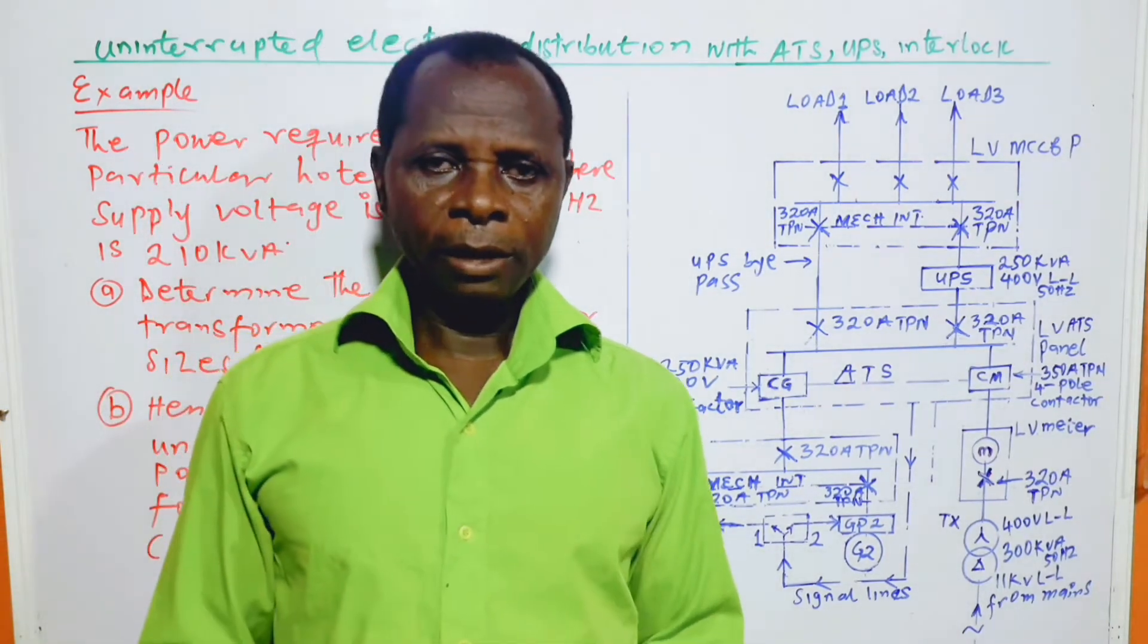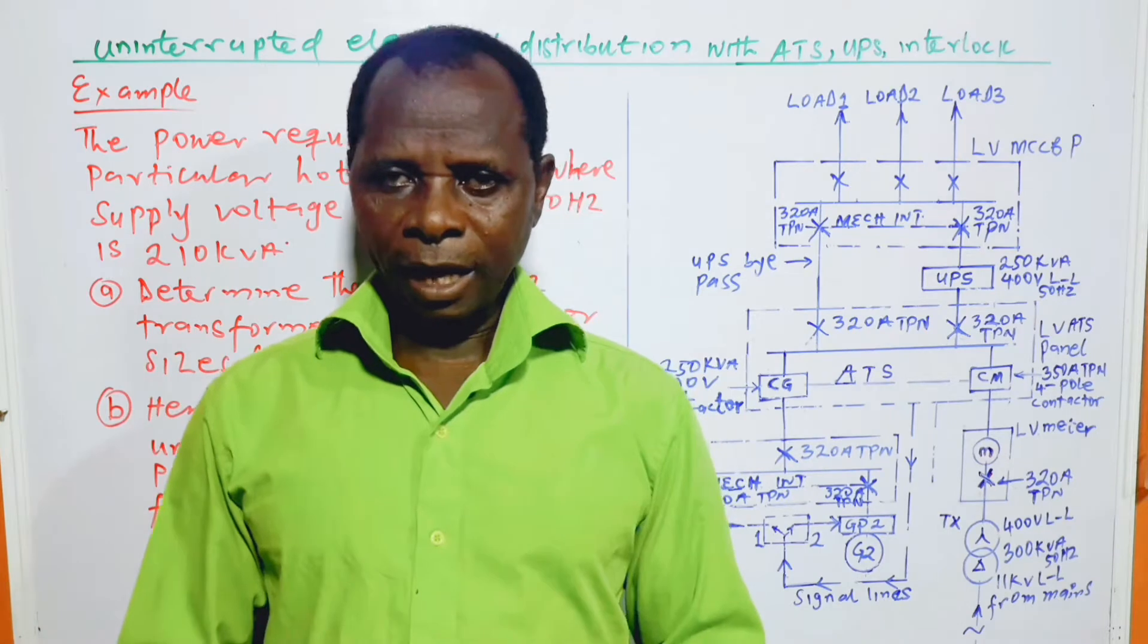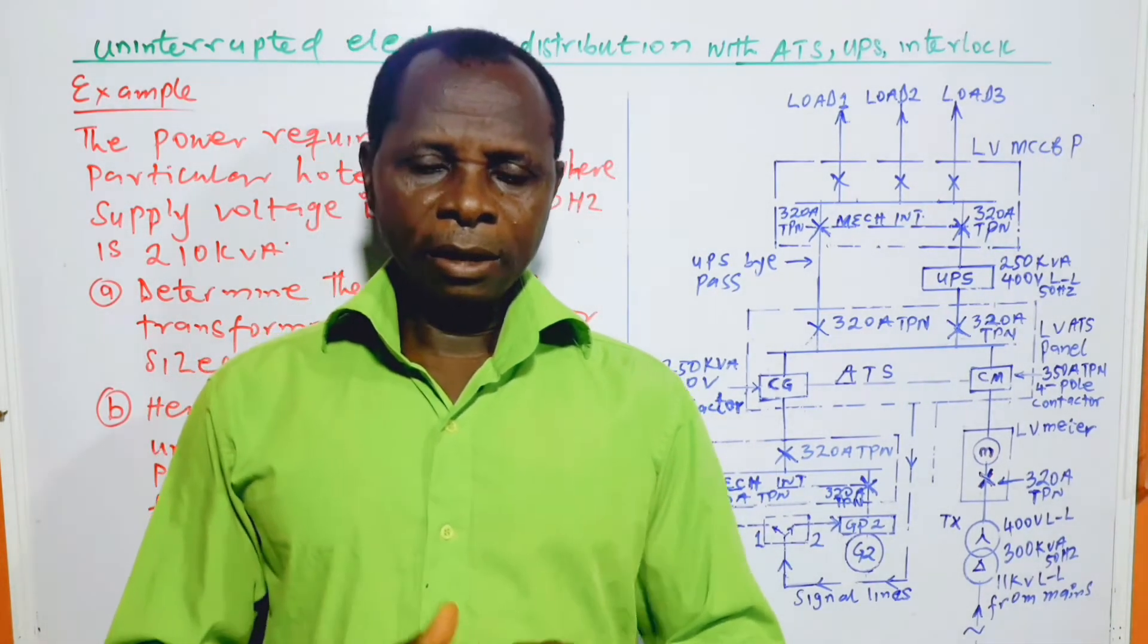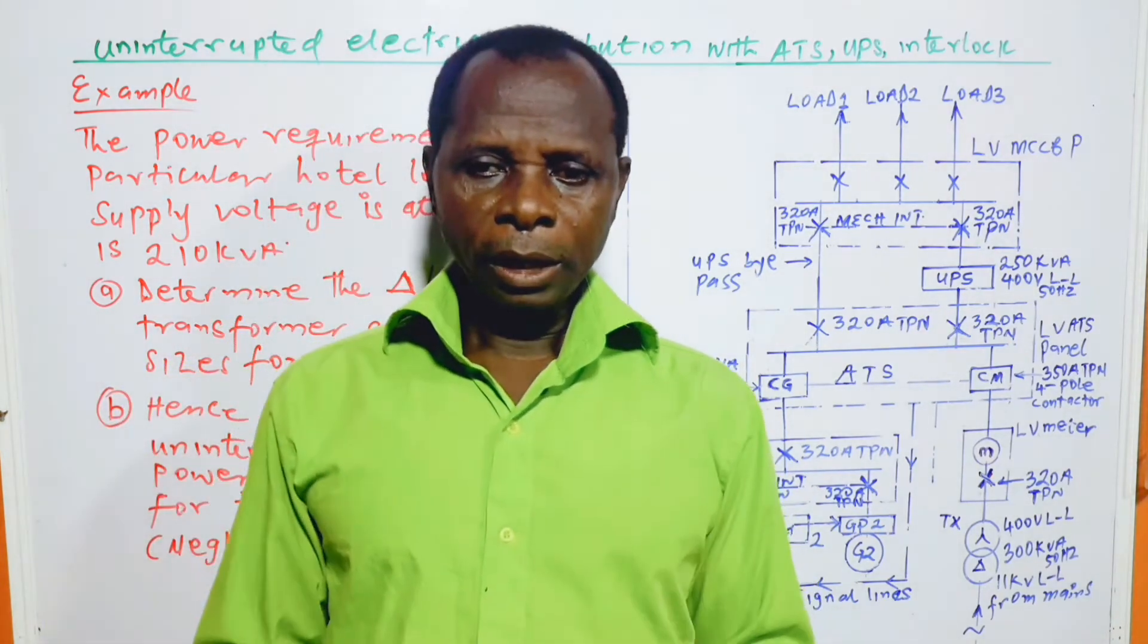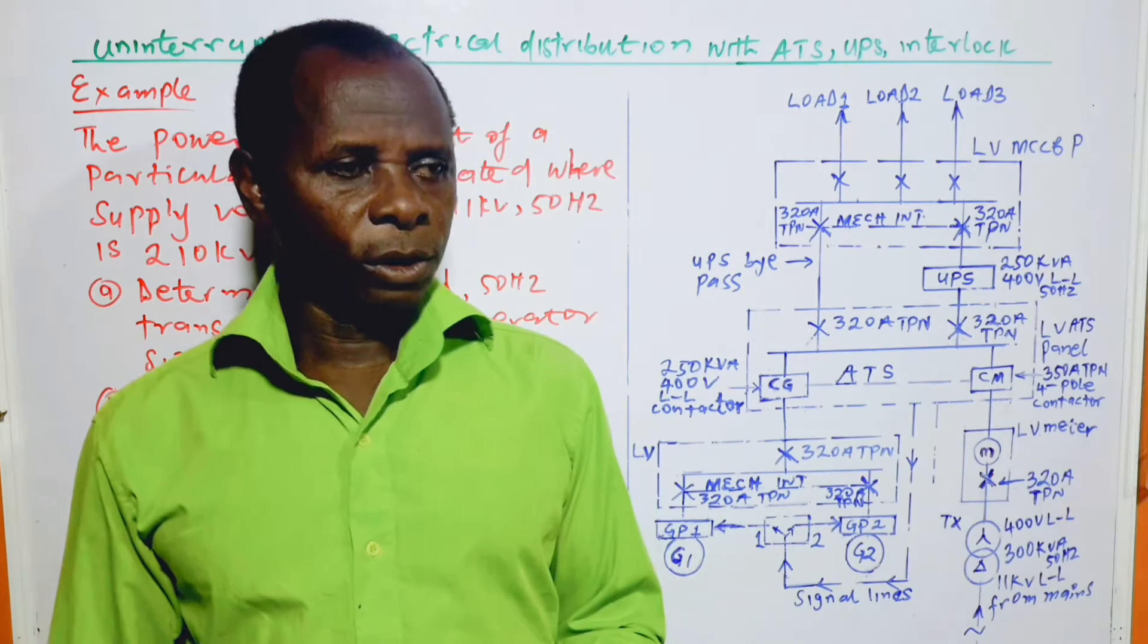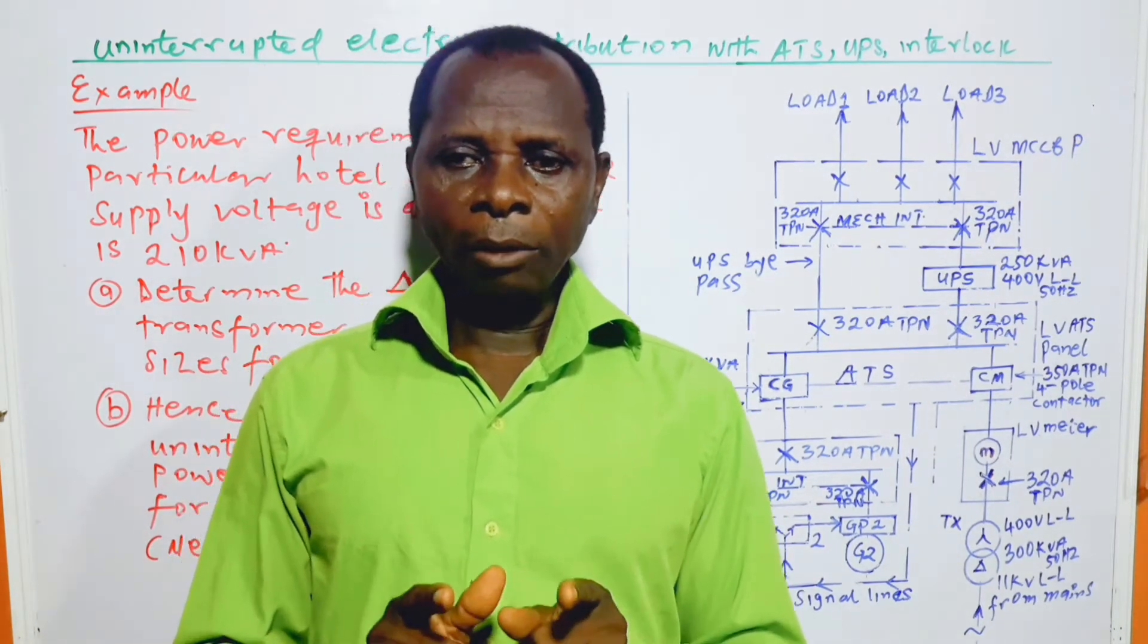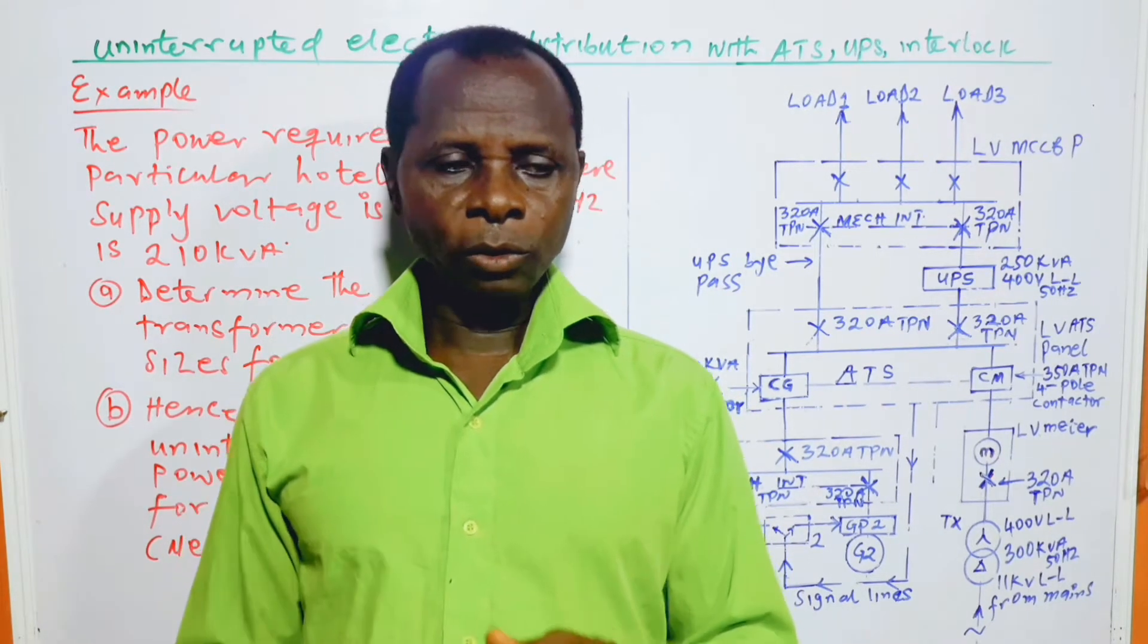Conventionally when there is a changeover from the mains power supply to the generator system or vice versa, there is always a blackout that characterizes the period of changing over. It is that blackout during the changeover system that I want to eliminate in this video. I'm going to show how a design can be done and installation can also be done to eliminate that kind of blackout. Even if it is an automatic changeover system, there is always time that is taken before the changing over is totally achieved.